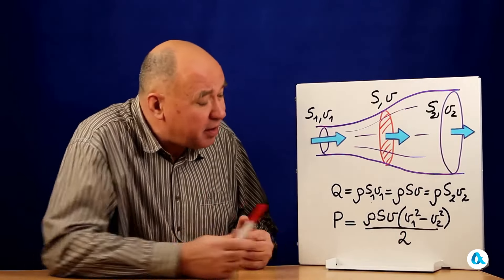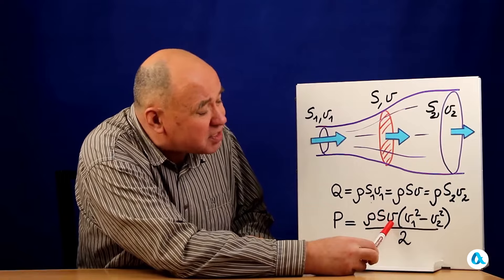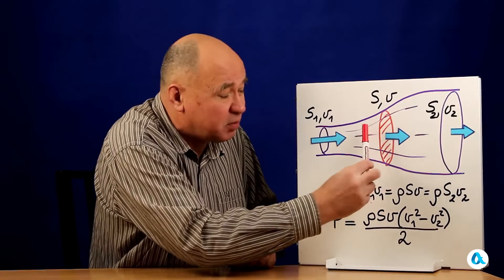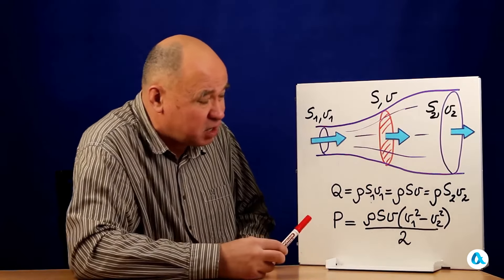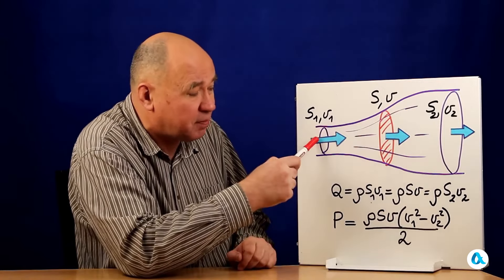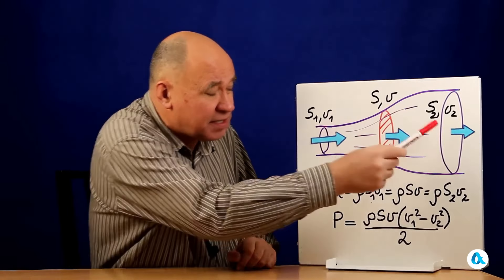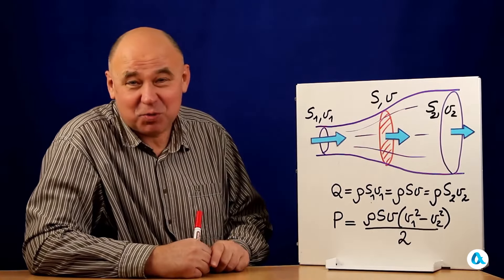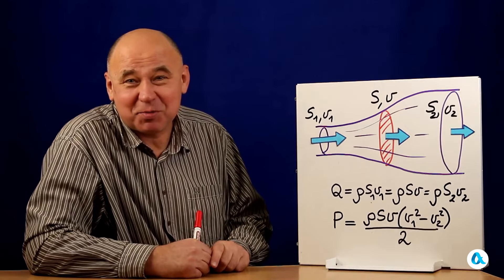And now the question arises, what is the value of this speed v, with which the air flows directly through the disc in this model? It is clear that it is less than the input speed and greater than the output speed. And now we will show that it is equal to the arithmetic mean of these two speeds.